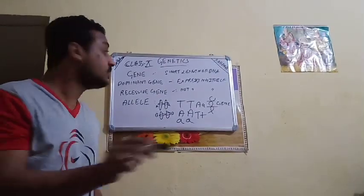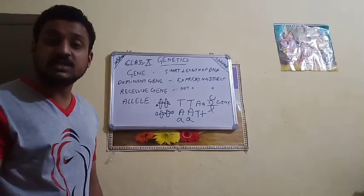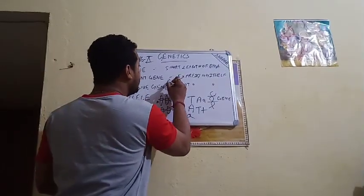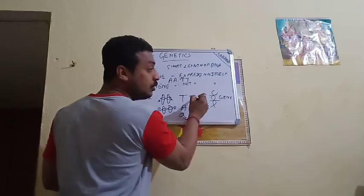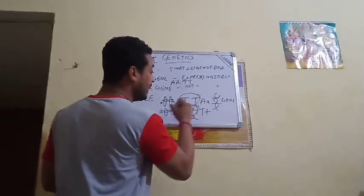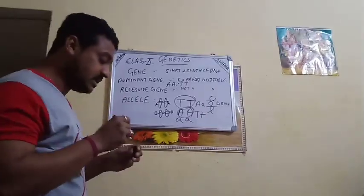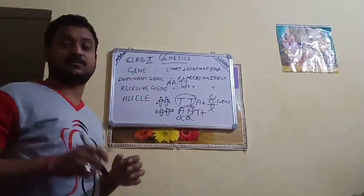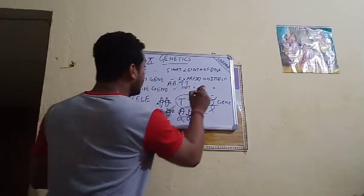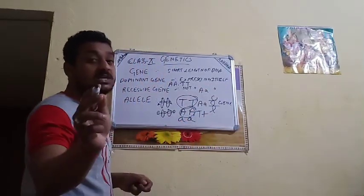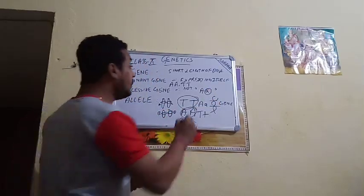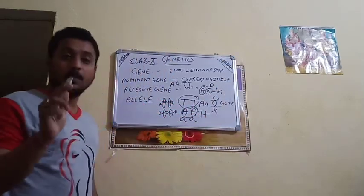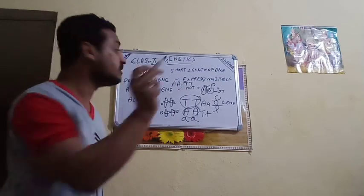Dominant genes are genes which express themselves. Recessive genes are genes which cannot express themselves. Dominant genes are always written in capital letters — capital A, capital T — and they will express themselves. Recessive genes cannot express themselves and are always written in small letters. For example, if we write capital A and small a, capital A is dominant and small a is recessive. Dominant must be written with capital letter and recessive must be written with small letter.